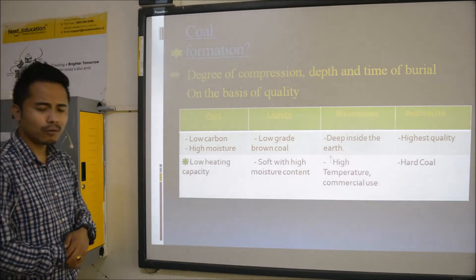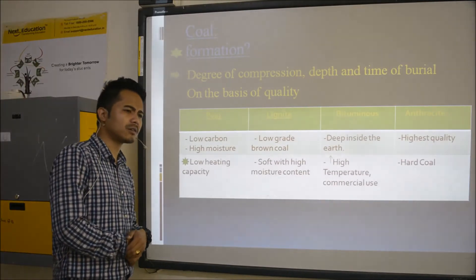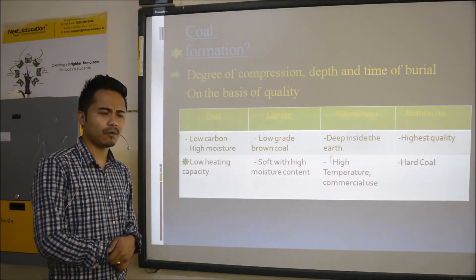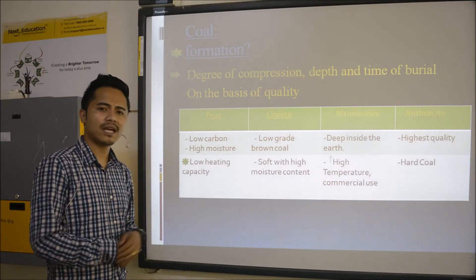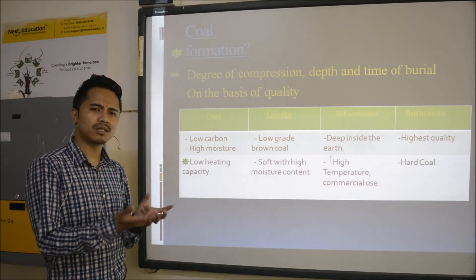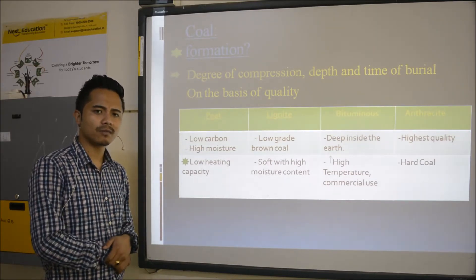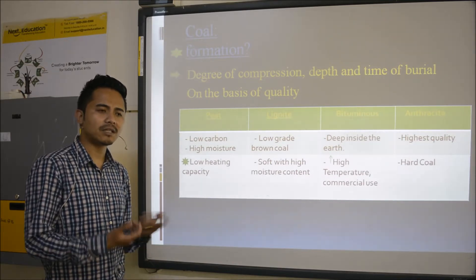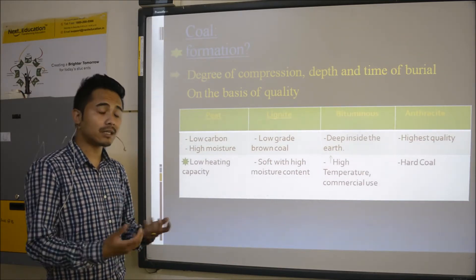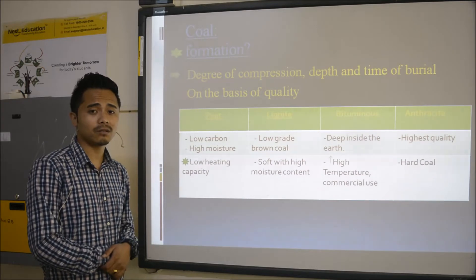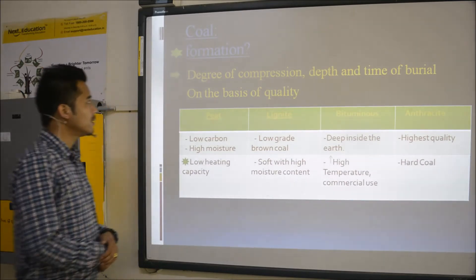Coal is not considered an environmentally friendly resource. Why? Because it emits lots of smoke. It can destroy the ozone layer too, and it can create lots of air pollution. The formation of coal depends on the degree of compression, the depth at which it is found, and the time of burial — how long it has been under the earth's crust.